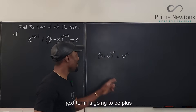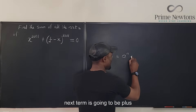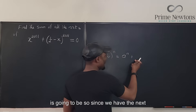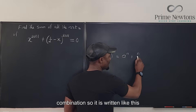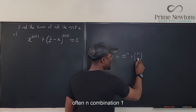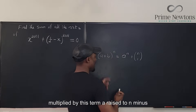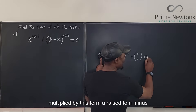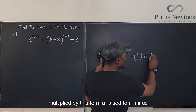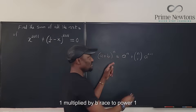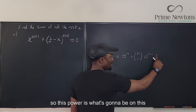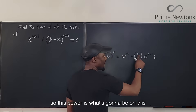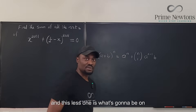The next term is going to be n-choose-1, written like n combination 1, multiplied by a raised to n minus 1, multiplied by b raised to power 1. So this power goes on a and this less 1 is what goes on b.